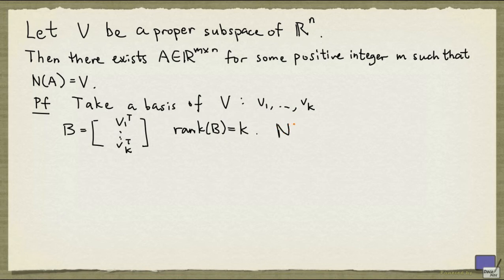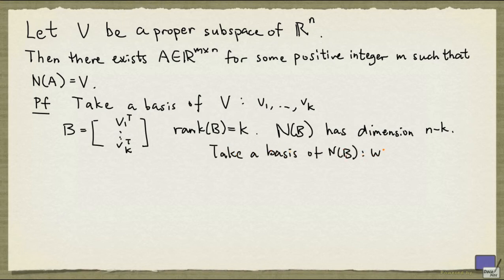Now look at the null space of B. The dimension of the null space of B is n minus k. And we take a basis for the null space of B, which we call W1 up to W n-k.